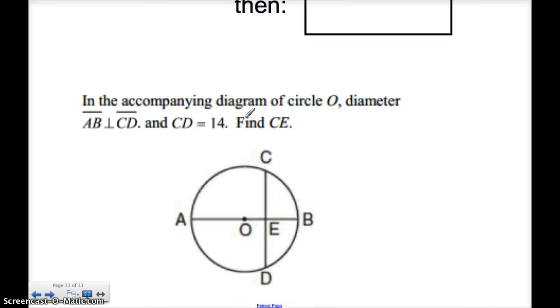Well, this first one is, in the accompanying diagram of circle O, diameter AB, which is this guy right here, is perpendicular to CD. So I know that chord CD is perpendicular to my diameter AB. I also know that CD, this whole thing is 14. Find CE. CE is this line right here. Just this part of it right here.